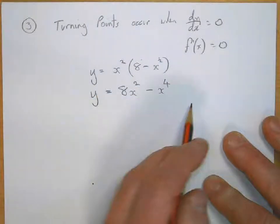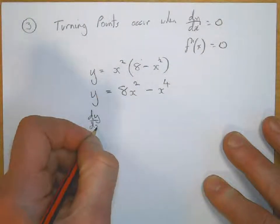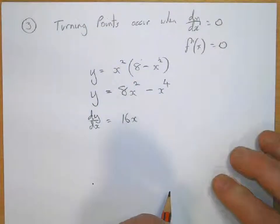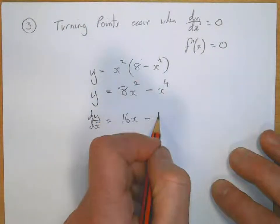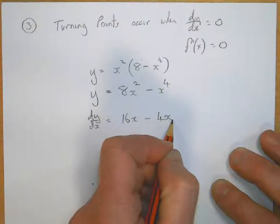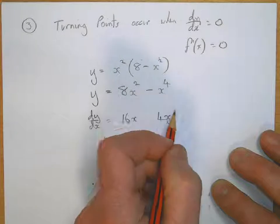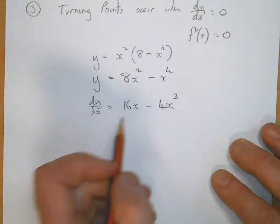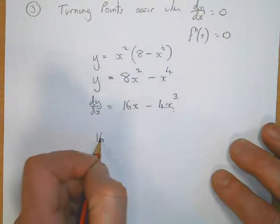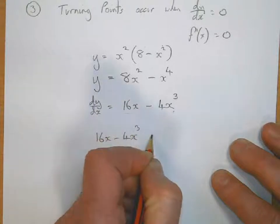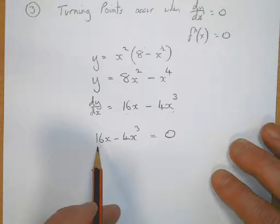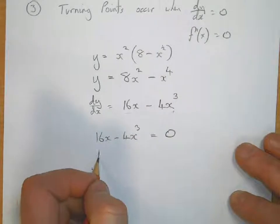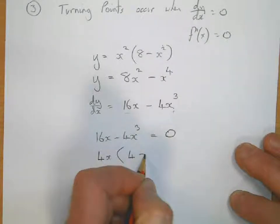Now we can differentiate. Multiplying by the power gives 16, then taking away 1 from the power leaves 16x. For the second term, multiplying by the power gives 4x, then taking away 1 from the power gives 4x cubed. So dy/dx equals 16x minus 4x cubed. The turning points occur when this equals 0. Factorising the common factor of 16x and 4x cubed gives 4x, leaving 4 minus x squared.